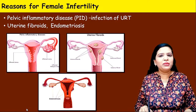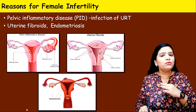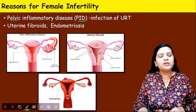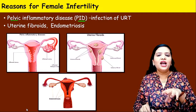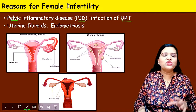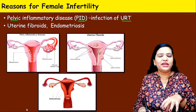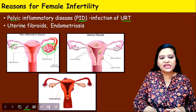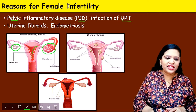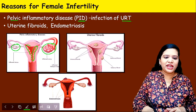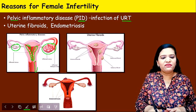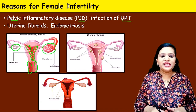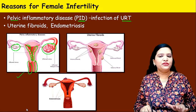Now let us see the reasons for female infertility. The first and most important is pelvic inflammatory disease (PID), caused by infection in the upper reproductive tract leading to inflammation. Looking at the picture, this is an inflamed ovary compared to a normal-sized ovary. Inflammation can occur in the endometrium, uterus, or vagina. These are the various causes of PID, and in such cases the woman becomes infertile.